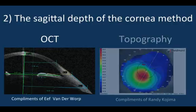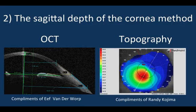The second method incorporates the height or depth of the cornea. By using OCT or topography with reference to a set corneal cord length, the sagittal depth of the cornea is determined. The fitting guide incorporates this depth with an additional tear film depth for the first trial lens selection.